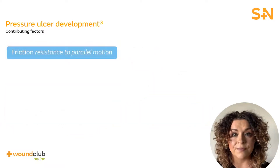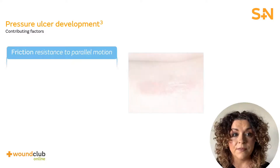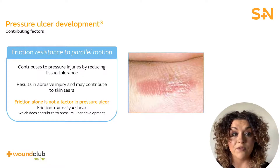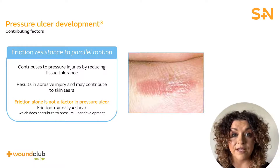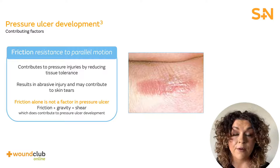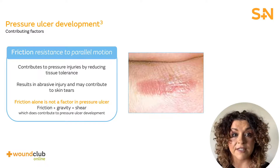So what about friction? Friction is resistance to parallel motion. Friction may occur from rubbing of the skin against a surface, other body parts or from a care provider when repositioning the patient. Friction results in abrasive injury and may contribute to skin tears among those at risk. Friction alone is not a factor in pressure injuries. However, friction plus gravity results in shear and that does contribute to the development of pressure ulcers.